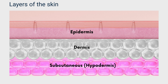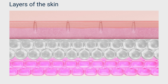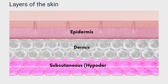Located beneath the epidermis, the dermis is rich in collagen and elastin fibers, providing the skin with strength and elasticity. It contains various structures like hair follicles, sweat glands, and sebaceous glands, as well as blood vessels and nerve endings. The dermis has two main layers.